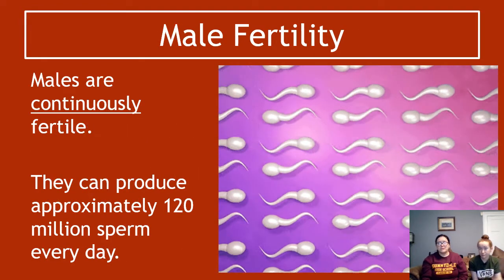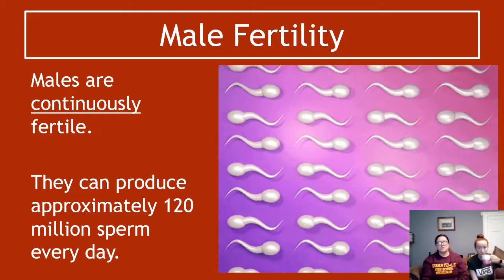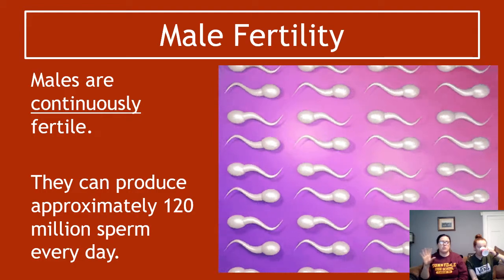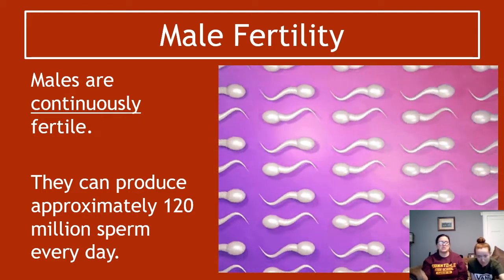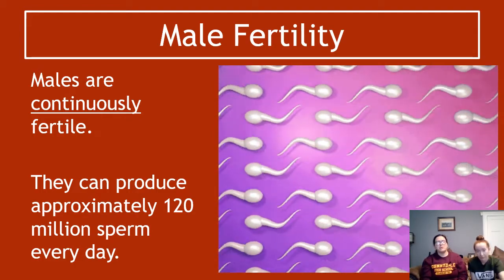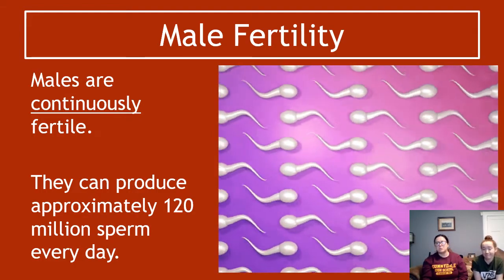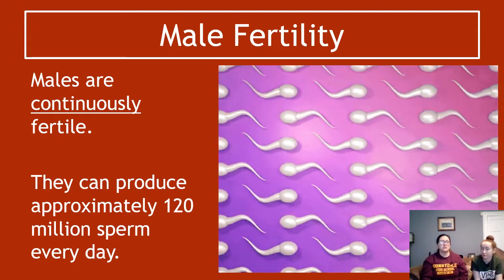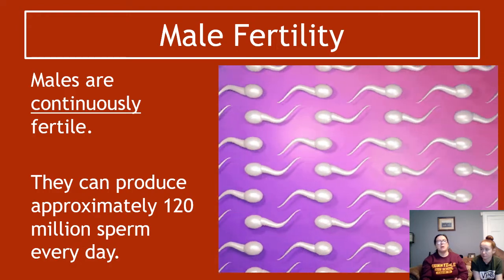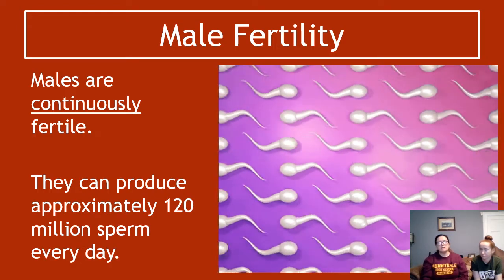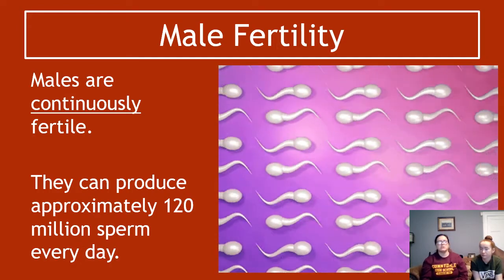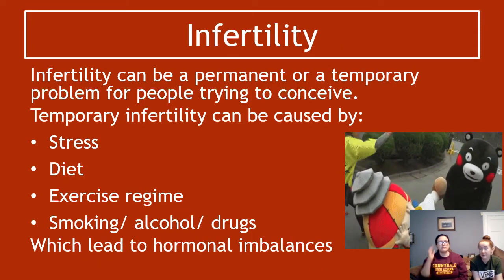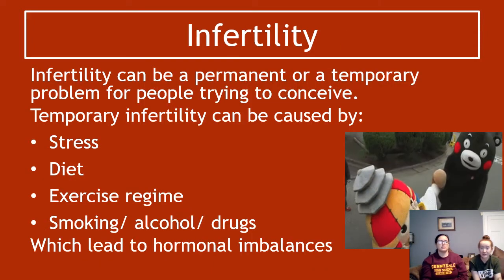Males are continuously fertile — fertile all the time, any time of day. They can produce approximately 120 million sperm every day. The sperm vary in quality and ability to fertilize, but the key point is massive amounts of sperm production continuously. There are no monthly cycles or anything like that involved in male fertility.